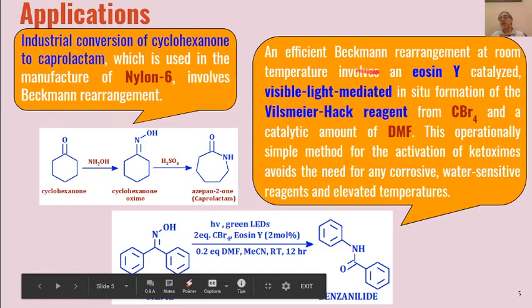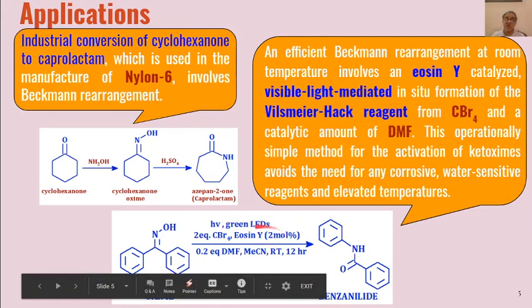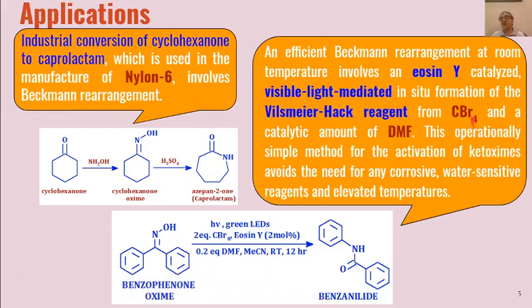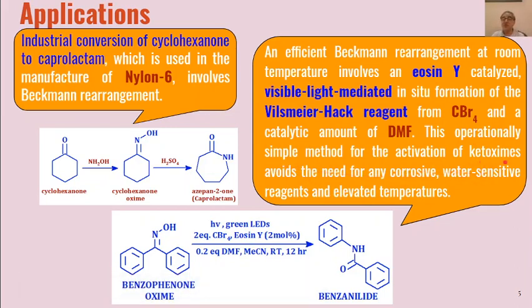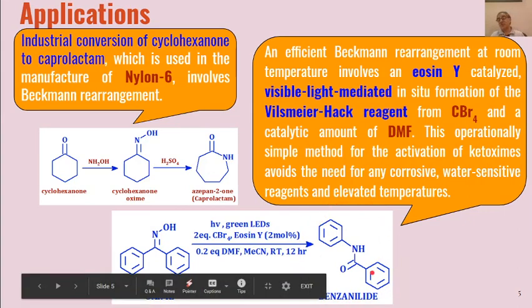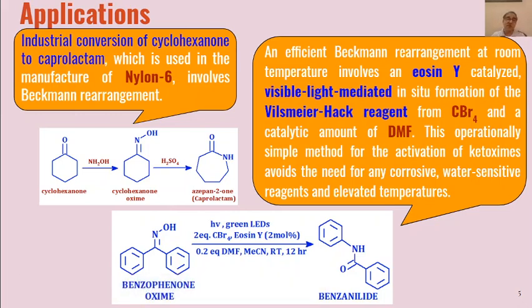An efficient Beckman rearrangement was also observed using eosin Y, which catalyzes a visible-light-mediated Beckman rearrangement. Here, eosin Y reacted with CBr4, and a Appel-type reagent was formed from CBr4 and a catalytic amount of dimethylformamide, acting as an acid. Ketoximes were converted into N-substituted amides as the product. For example, benzophenone oxime under these conditions was converted into benzanilide through Beckman rearrangement.